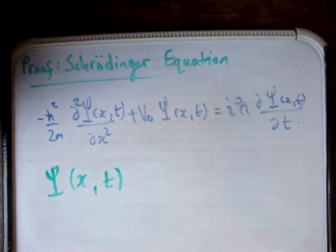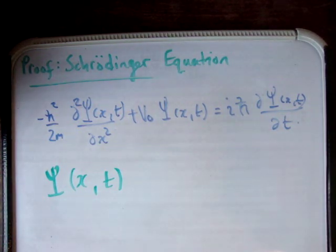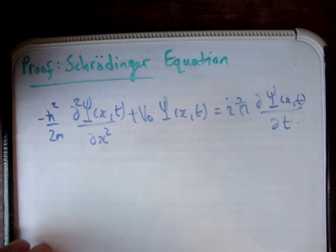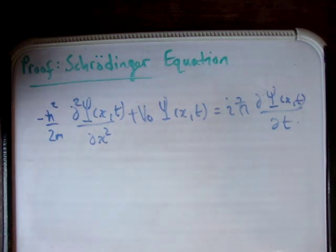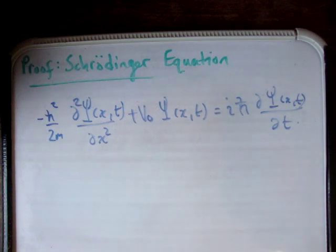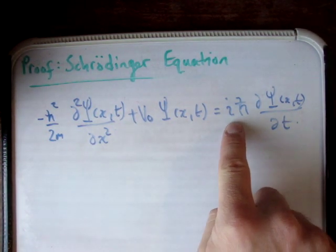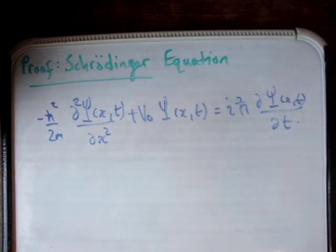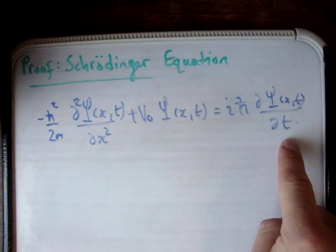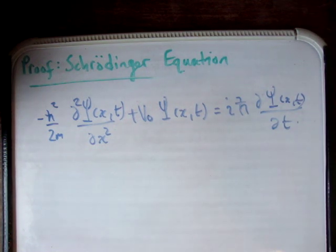Here we're getting the second derivative with respect to our spatial coordinate of our wave function. The next thing is the V0 component — V0 is a potential energy term. If your matter is moving in a potential energy field or some sort of force field, it has a potential energy associated with it, and this V0 term allows you to take account of that. Then we have iota, which denotes the fact that we're talking about a complex number, and finally the time derivative of our total wave function ψ(x,t).